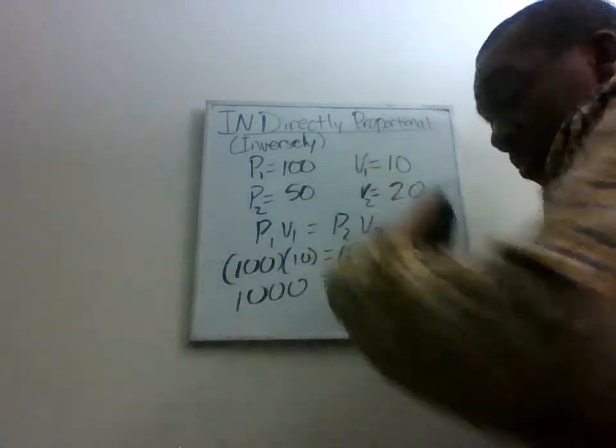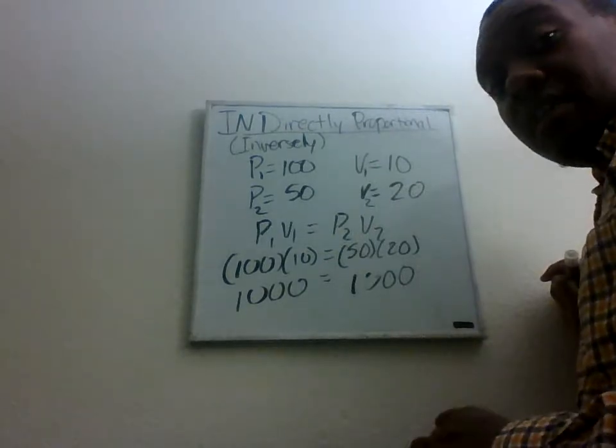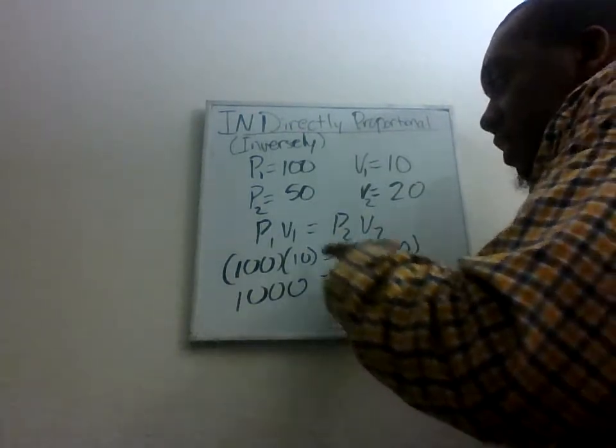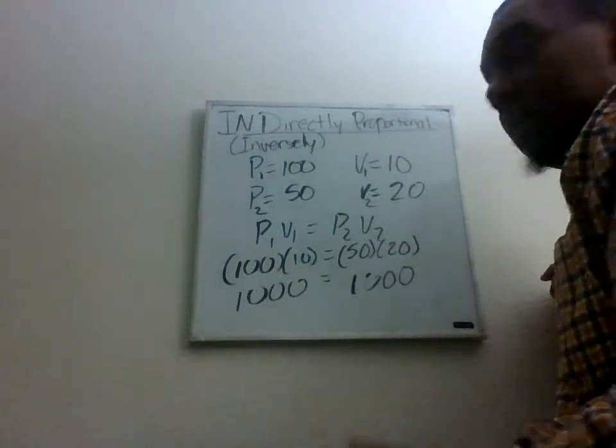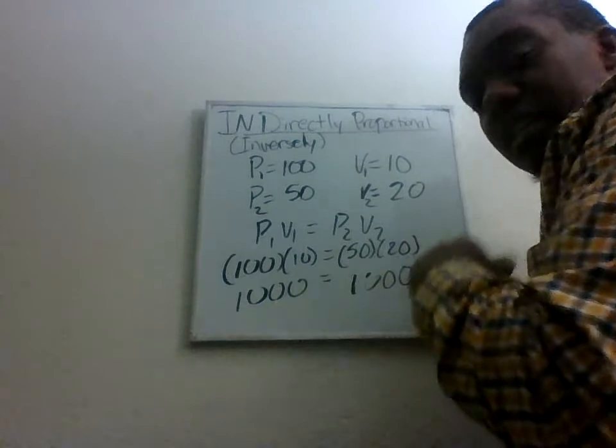It's what we got when we multiplied the two pieces that were indirectly or inversely proportional for one another. Same thing happens here. When I multiply these numbers, I get 1,000. That's actually my constant. No matter what, when you multiply these, you have to get 1,000.